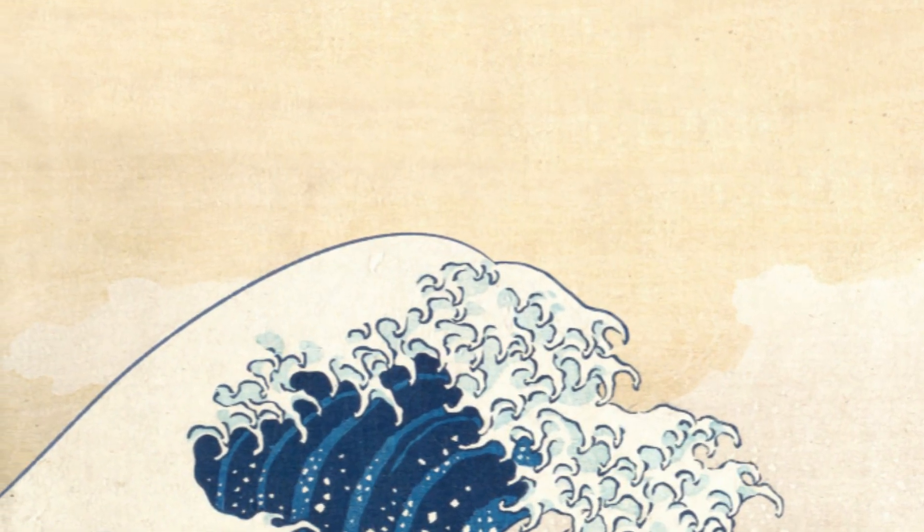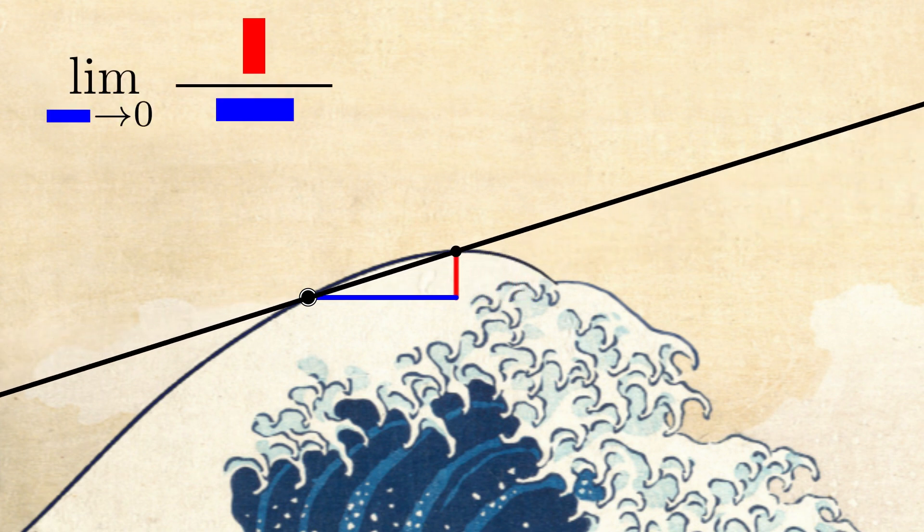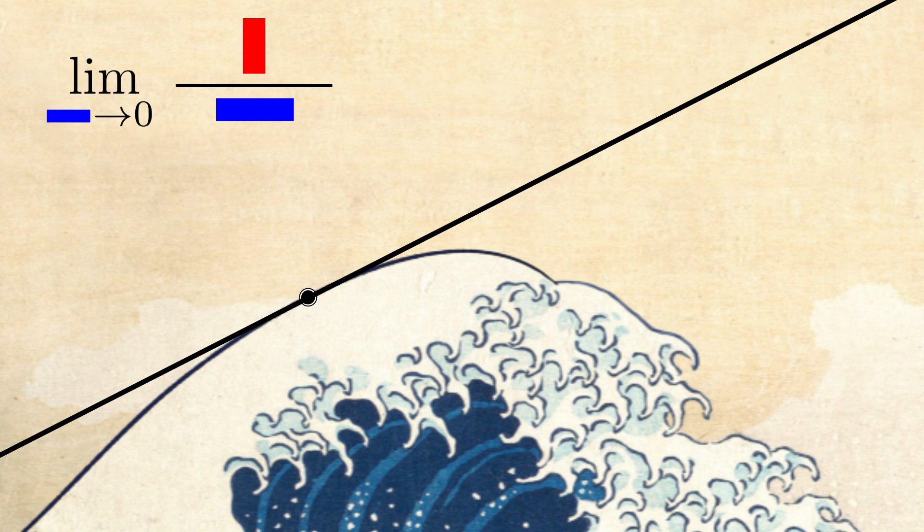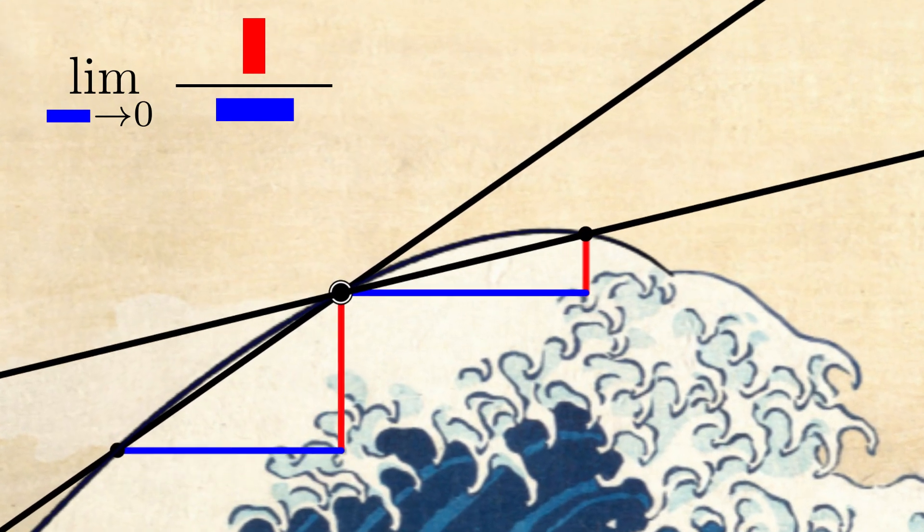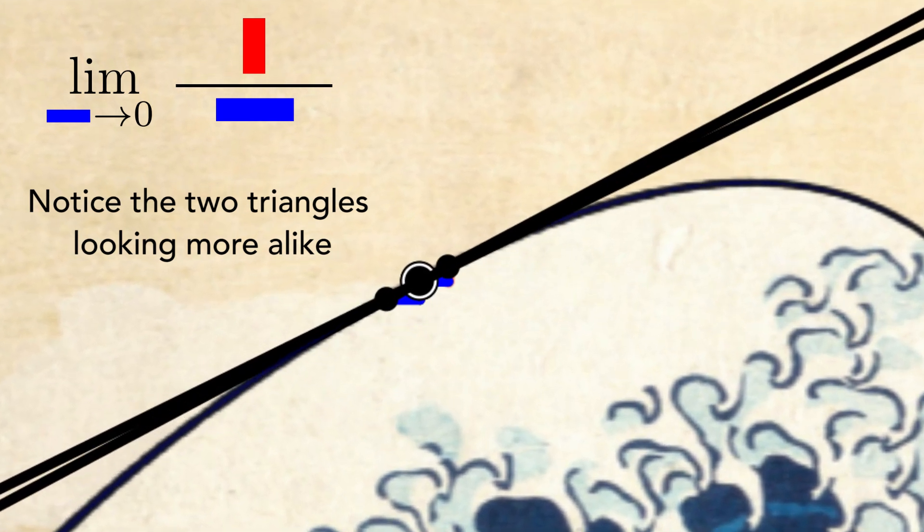...we can simply draw a line from our point to any other point on the graph and bring them as close as possible, letting the side lengths approach zero. Obviously, when they have no length, we can't calculate the ratio, so we simply get the limit of the amount of slant the line appears to be approaching as side lengths tend to 0.